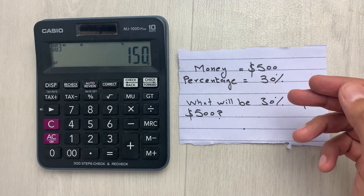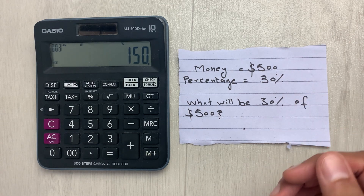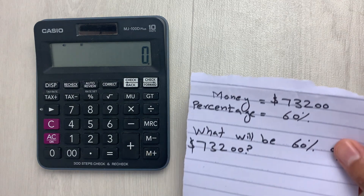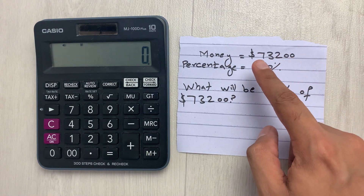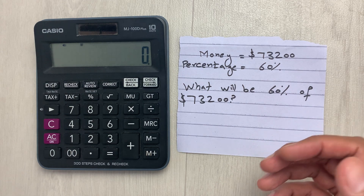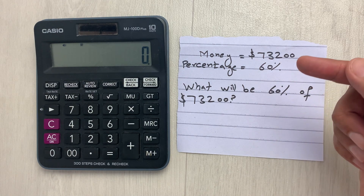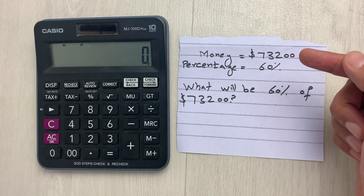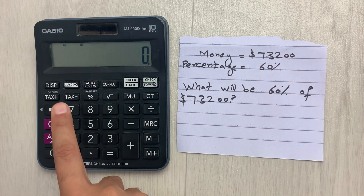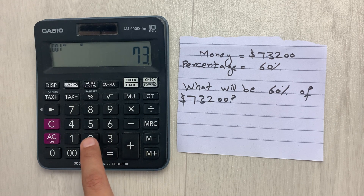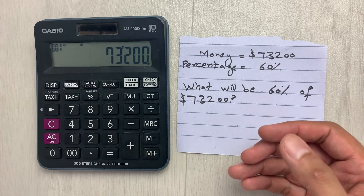Let's move to another example. Let's say you have 73,200 dollars and you want to find out what will be the 60 percent of 73,200 dollars. First of all on your calculator you have to type 73,200.